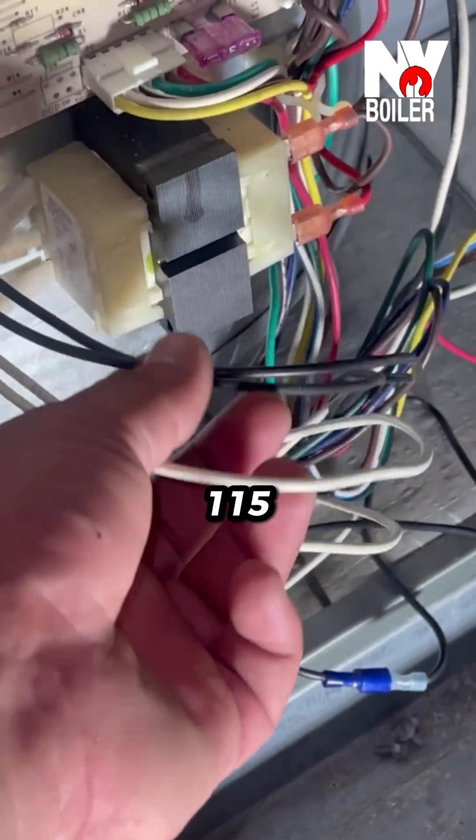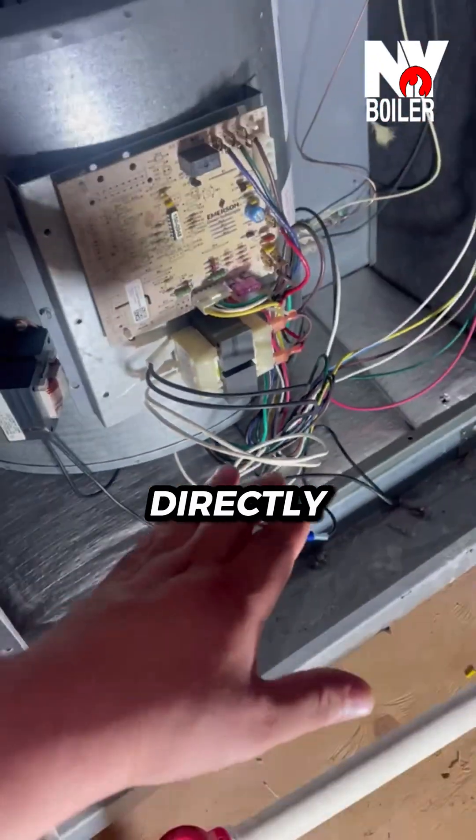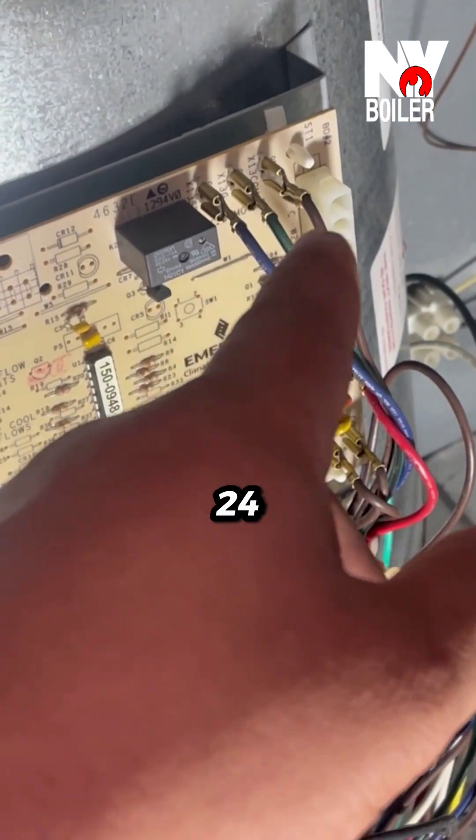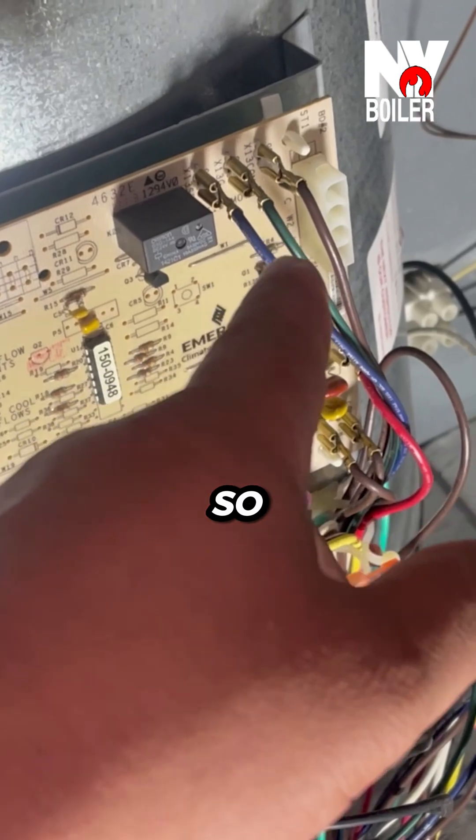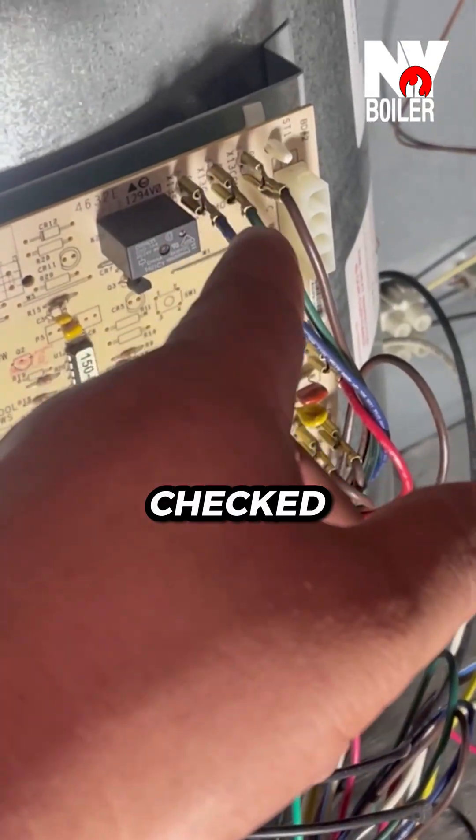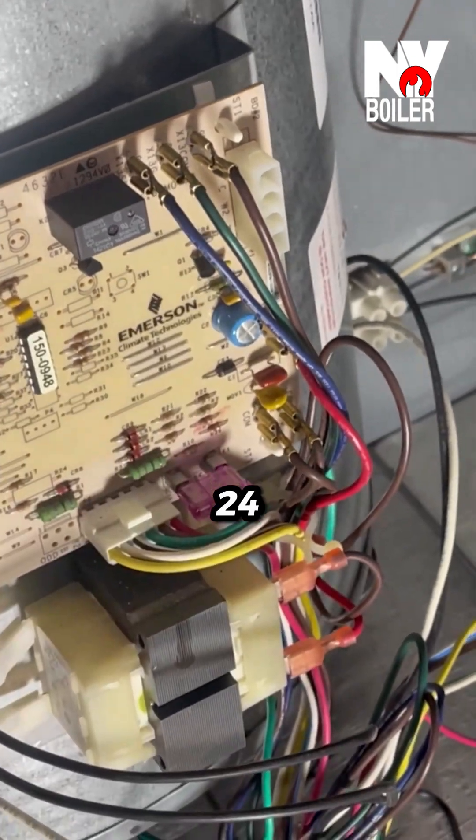So you got 115 volts going directly to the motor, and over here this one gives you 24 volts that powers your motor. So you have a low voltage side and a high voltage side on the motor, and sure enough I checked here that I got 24 volts going directly to the motor.